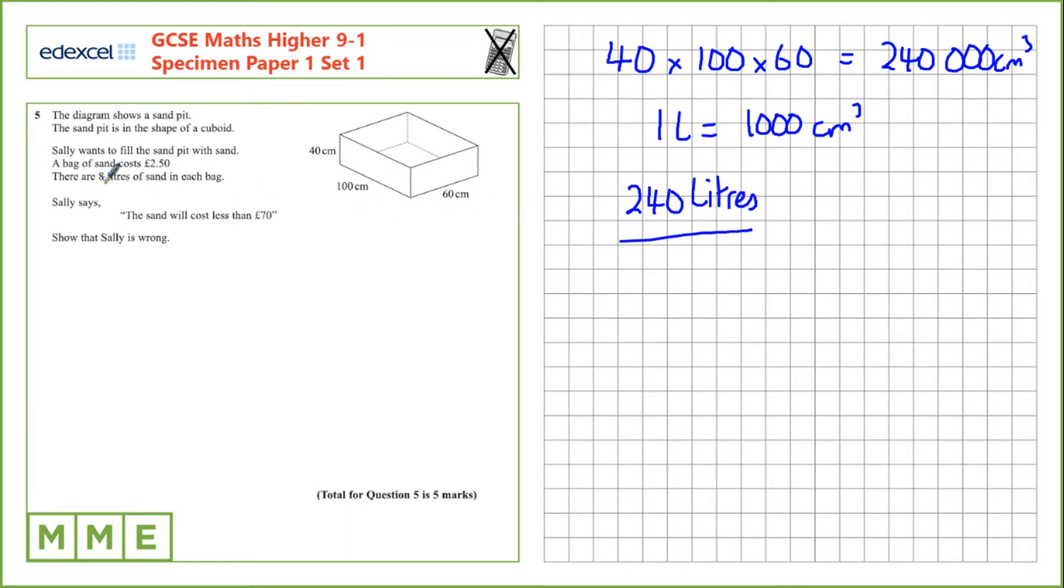Next let's take the 240 litres and divide by the number of litres in a bag. That'll give us the number of bags. So 240 divided by 8. 24 divided by 8 is 3, so 240 divided by 8 is 30. That's 30 bags.